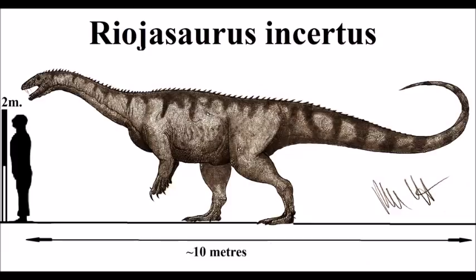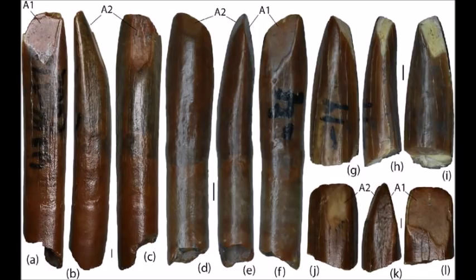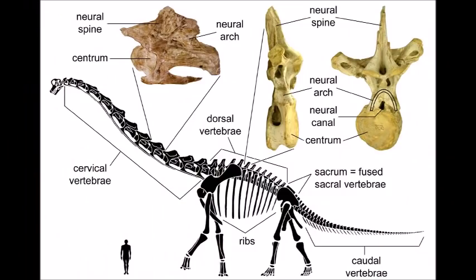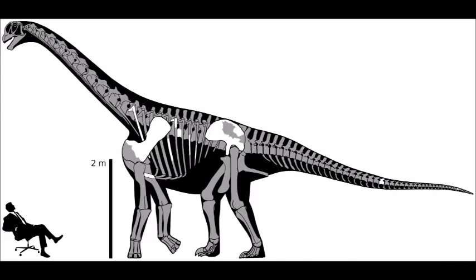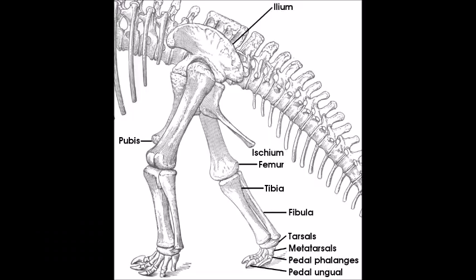Now, just what morphological features unite the prosauropods and sauropods? Well, they both have peg-like teeth with spatulate or lanceolate crowns, enlarged nares, 10-plus cervical vertebrae, 3-plus sacral vertebrae, a tibia longer than the femur, an ascending process of astragalus that fits into the slot formed by the descending process of the tibia, as well as a number of other features.